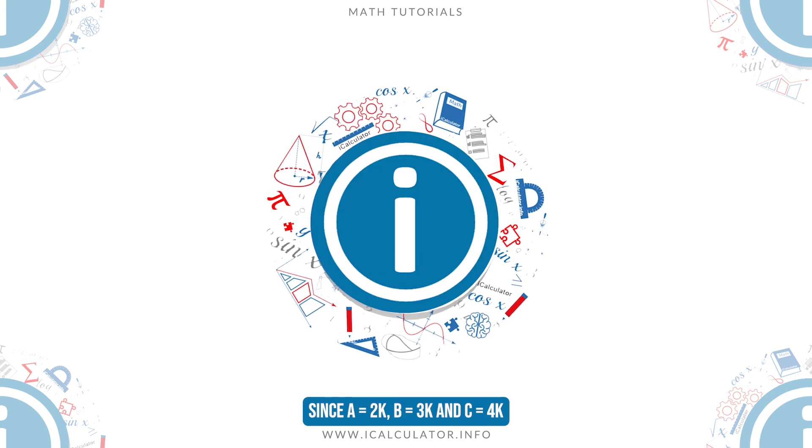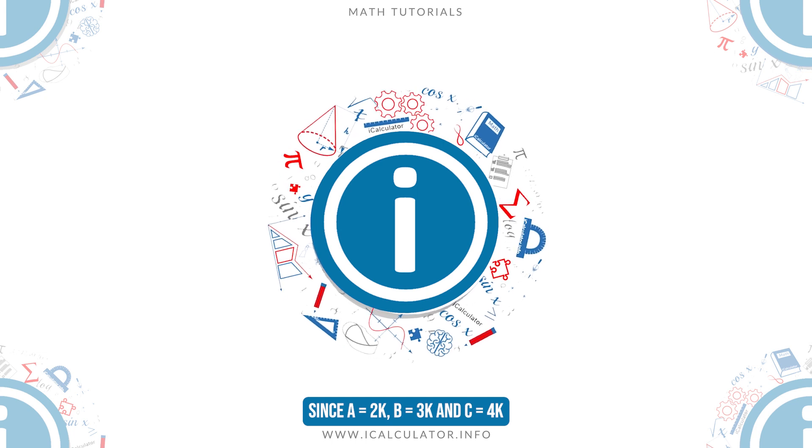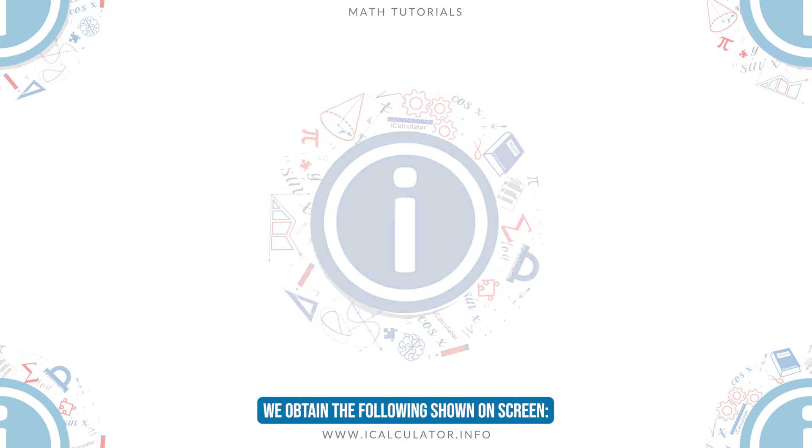Since a equals 2k, b equals 3k and c equals 4k, we obtain the following shown on screen.